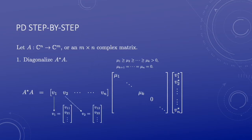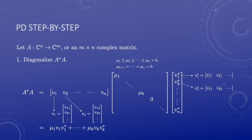Here V1, V2, up to Vn are the corresponding eigenvectors, written as column vectors. They form an orthonormal basis for C^n. And V1 star up to Vn star are the conjugate transpose, written as row vectors. With these notations, A star A is written as a weighted sum of rank-1 orthogonal projections. There are only k terms in the summation, since the last n minus k eigenvalues are zero.